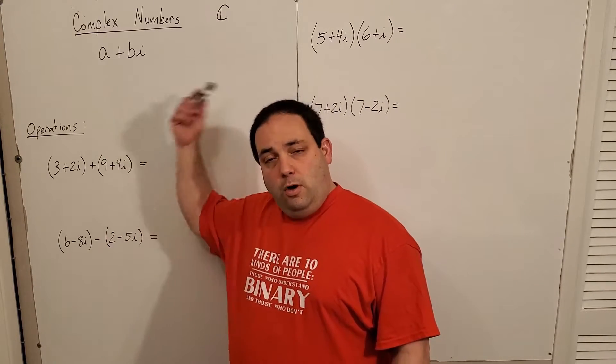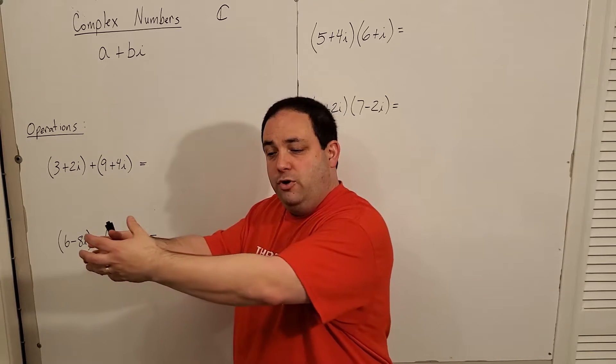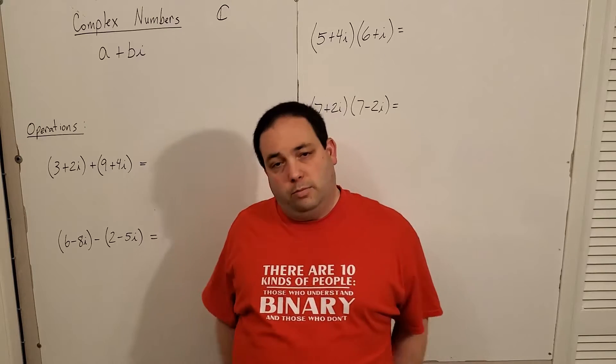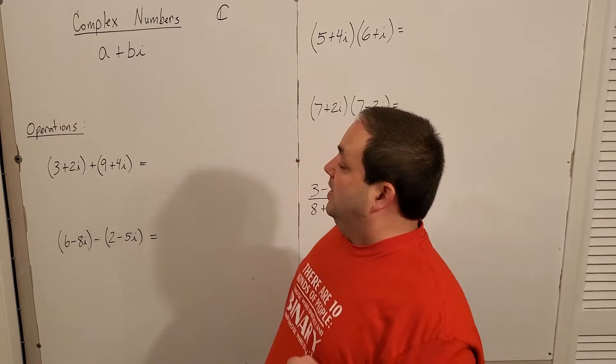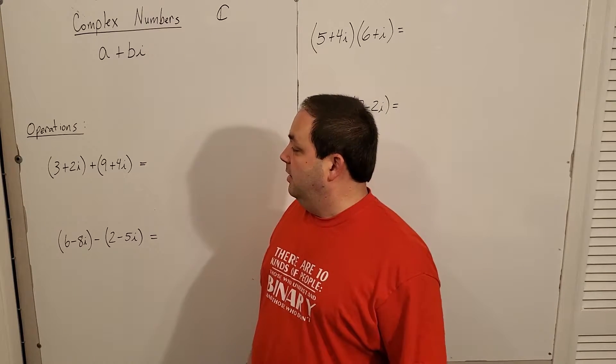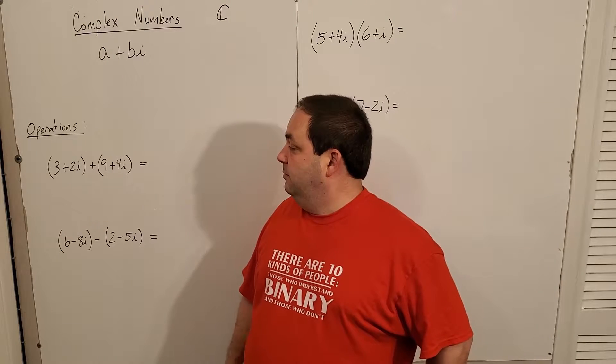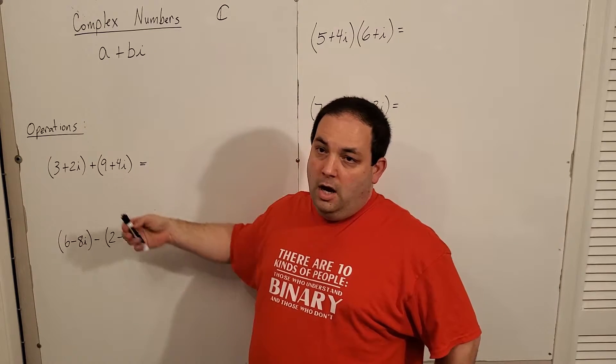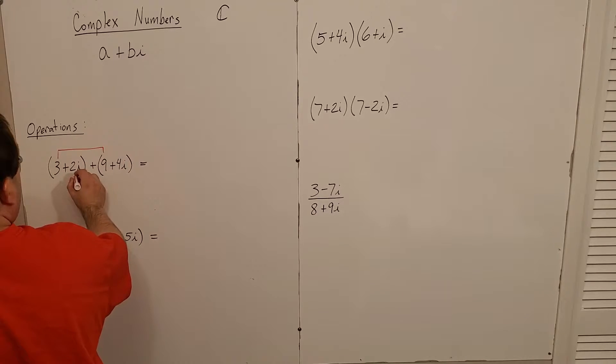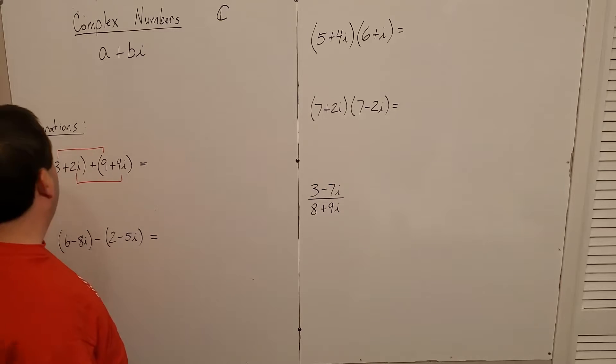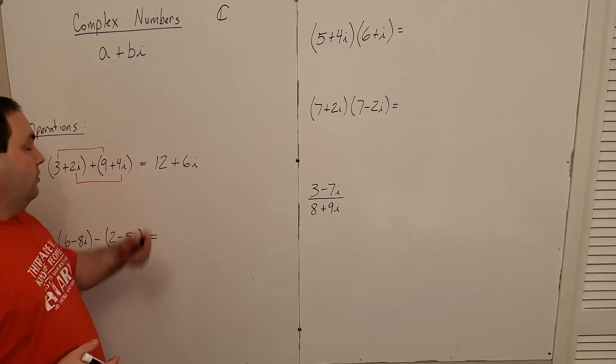Let's go through a couple of operations, addition, subtraction, multiplication, division, just so that you know how these can interact. Addition and subtraction: you're very familiar with this concept, especially when it comes to linear terms. All it is is combining like terms. When I have a complex number plus another complex number, I'm simply going to combine the things that are like terms. So I'm going to add the three and the nine, and I'm going to add the two i and the four i for a grand total of 12 plus six i.